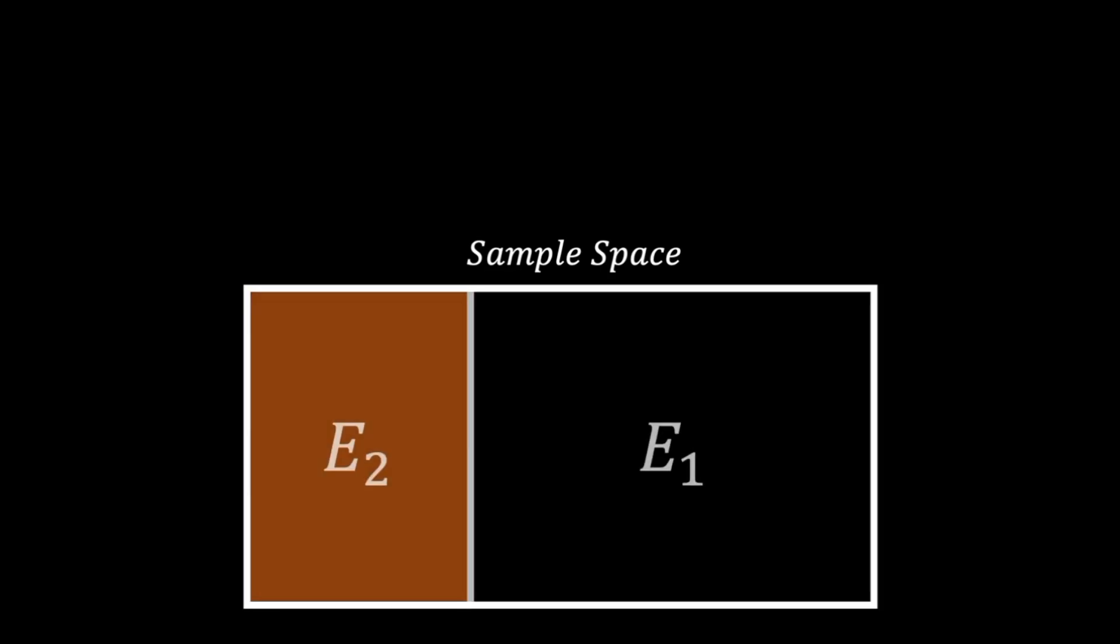To those who were slightly stumped by the question, the trick is to realize that the sample space of such problems is often split into two events. By the law of total probability, the sum of the probabilities of these events is 1.